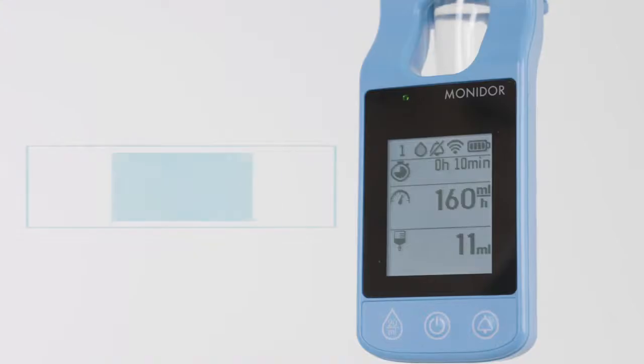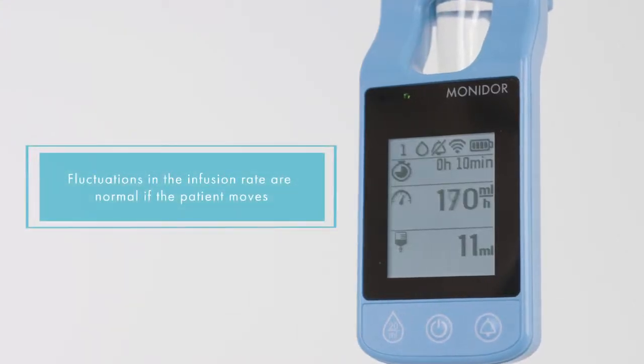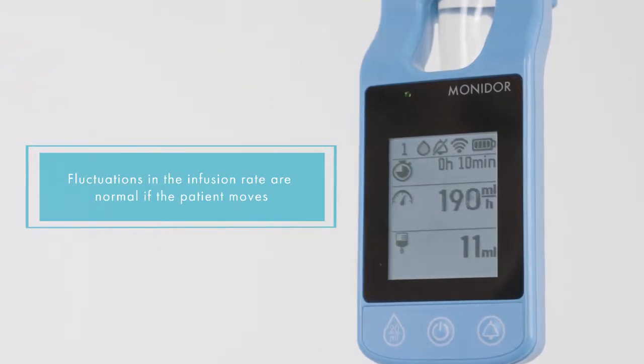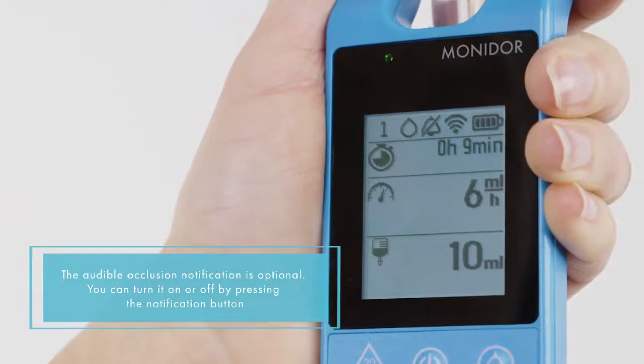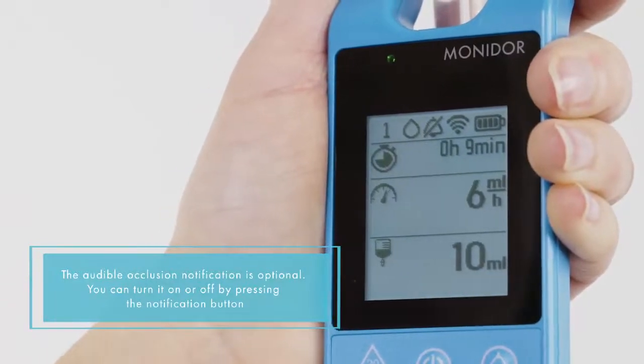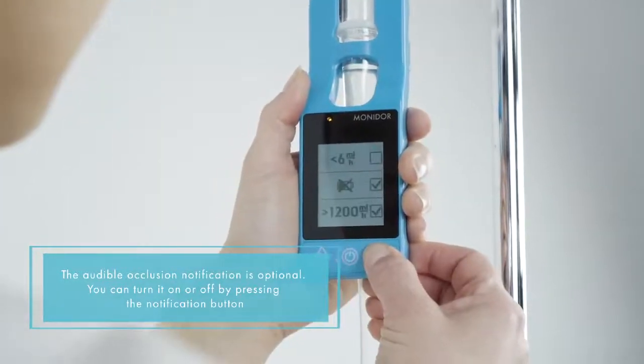The MoniDrop device doesn't adjust the infusion rate. Fluctuations in the infusion rate are normal if the patient moves. The audible occlusion notification can be turned on by pressing the notification button.